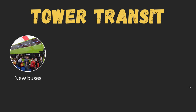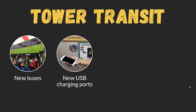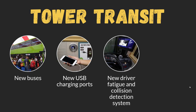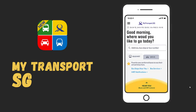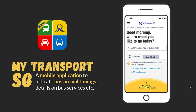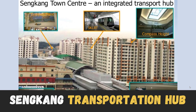Competitors to SBS Transit such as Tower Transit introduced new buses with USB charging ports and driver fatigue and collision detection systems, minimizing accidents using computerized systems. The MyTransportSG app allows people to check bus arrival times and plan routes from one place to another, making travel very smooth. There is also the Sengkang Transportation Hub, which is fully air-conditioned and integrates a shopping mall, LRT, residential, commercial, and transport facilities all in one place.